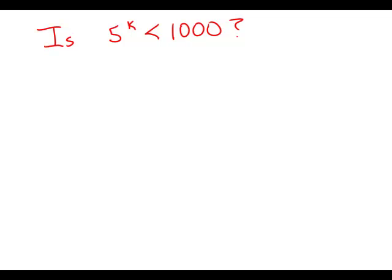Is 5 to the k less than 1,000? Very simple prompt. Statement number one tells us that 5 to the k plus 1 is greater than 3,000. This is an interesting statement. Let's explore this.